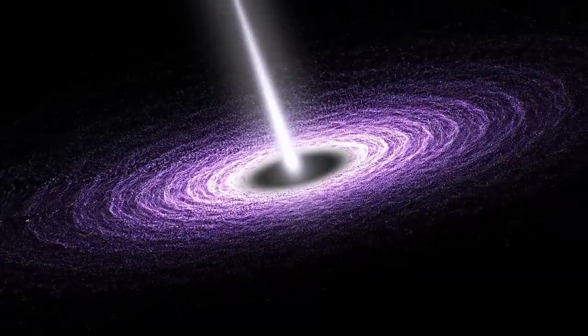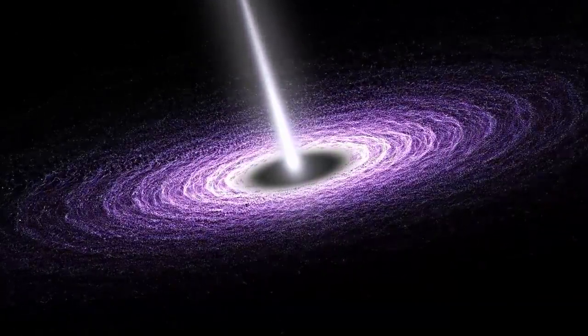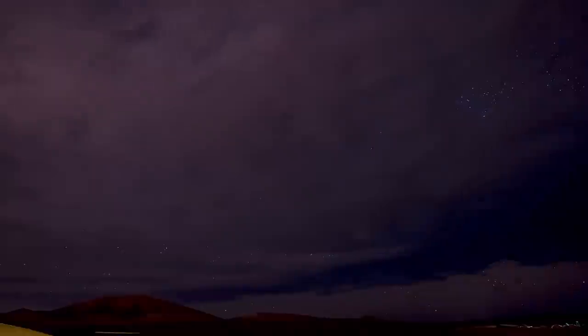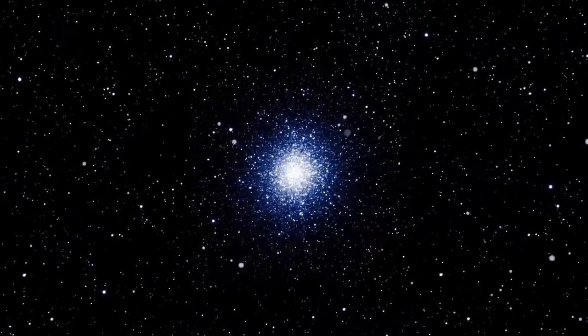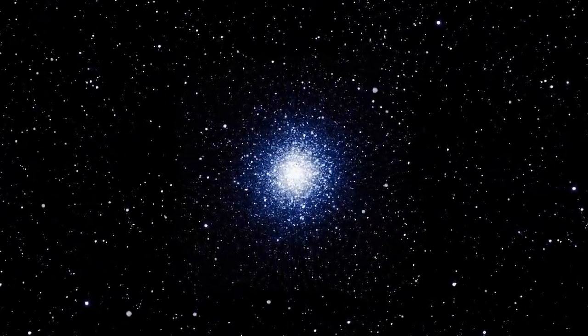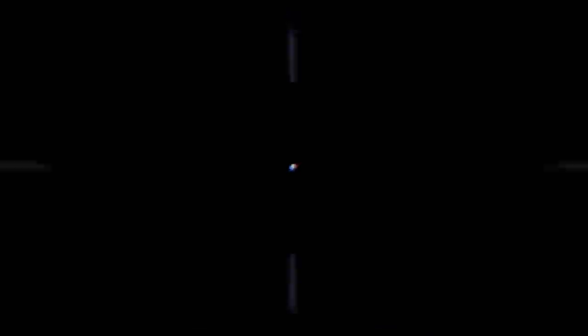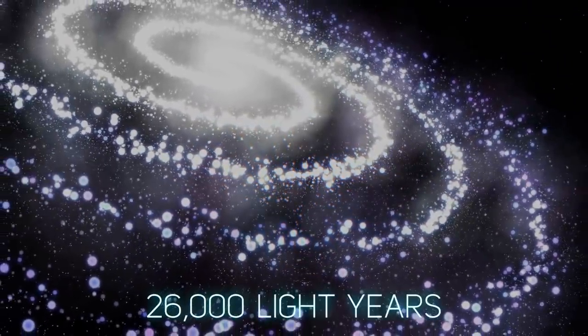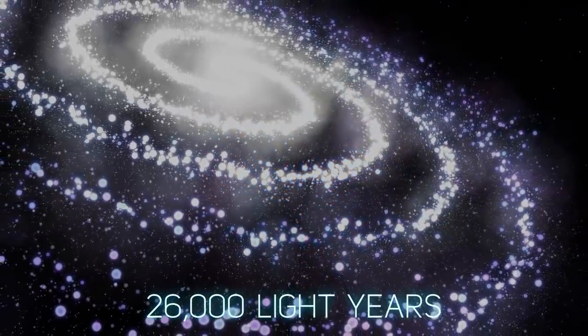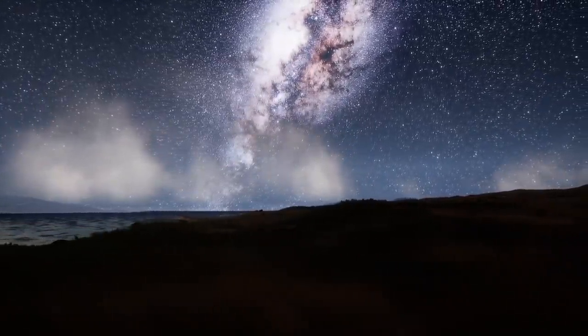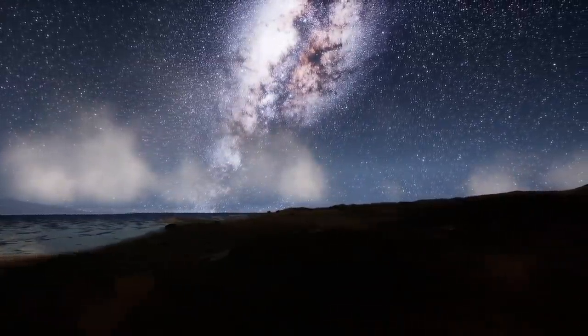Before we start talking about quasars and blazars, let's agree on this premise: every time you gaze at the stars, you don't actually see the way they look now, but the way they looked hundreds, thousands, millions, and sometimes even billions of years ago. For instance, the distance between Earth and the center of the Milky Way is roughly 26,000 light years, meaning that light takes 26,000 years to travel from there to us. So if we are observing the center of the Milky Way from Earth, we would see how it looked about 26,000 years ago.